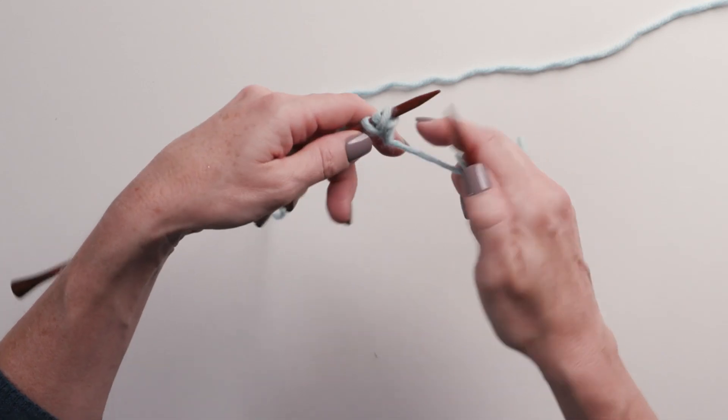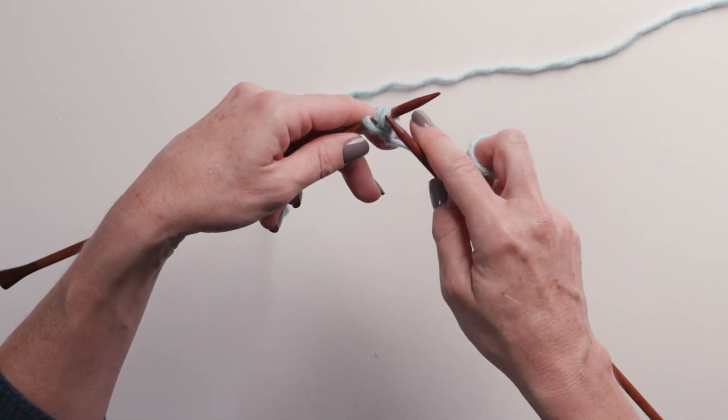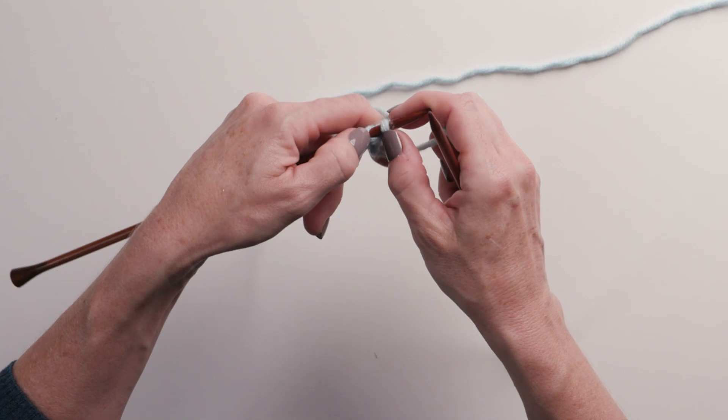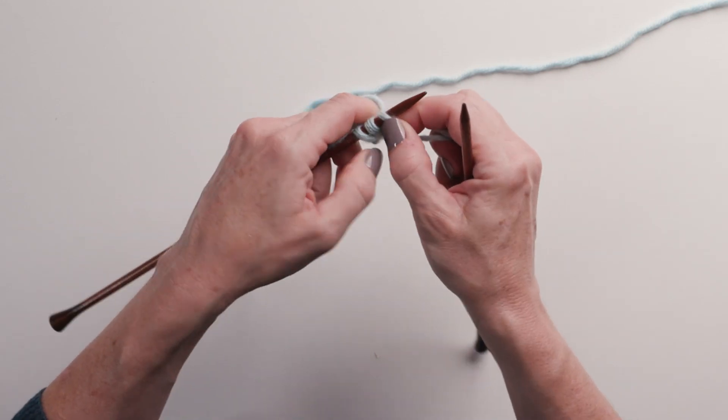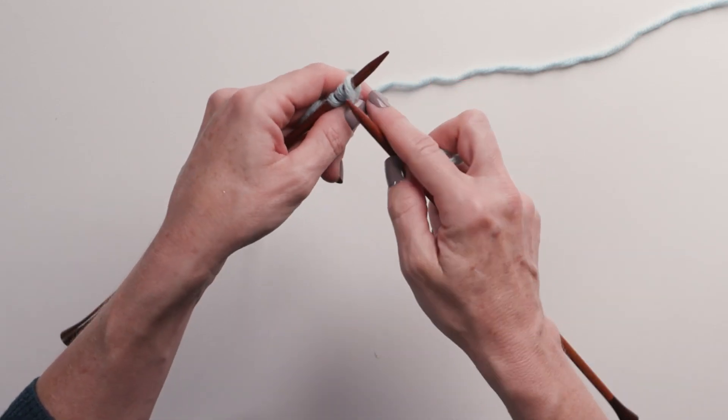And you can see it looks a little odd because that new stitch is kind of crossing over your second stitch. Again, don't worry. You do want to keep this a little on the loose side.